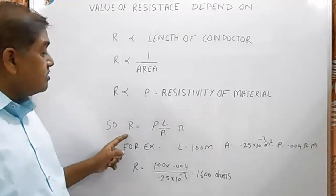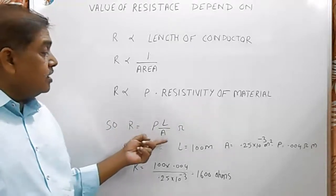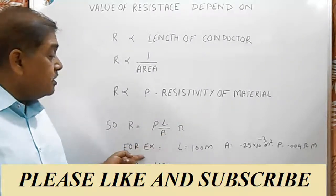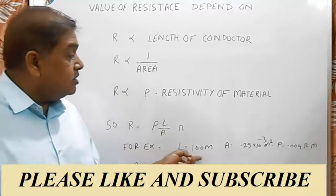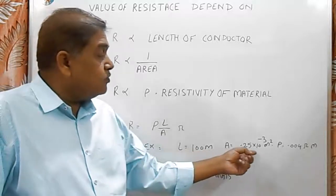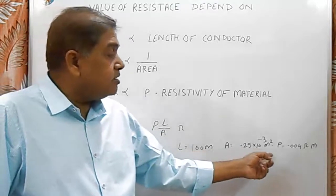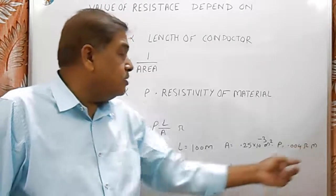So the formula is R = ρ × L / A. For example, L = 100 meter, A = 0.25 × 10^-3 meter, and ρ = 0.004 ohm-meter.